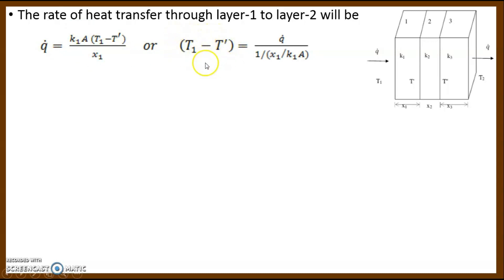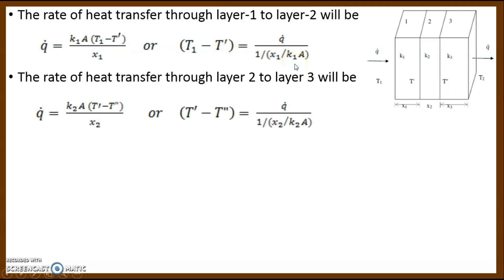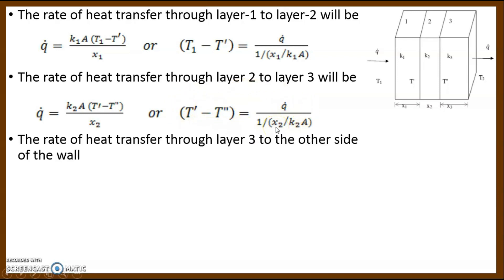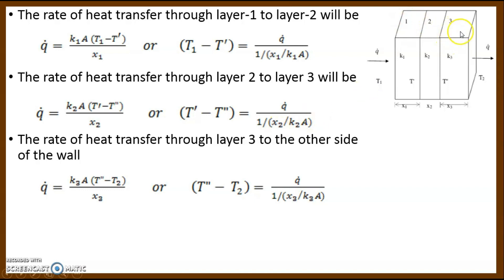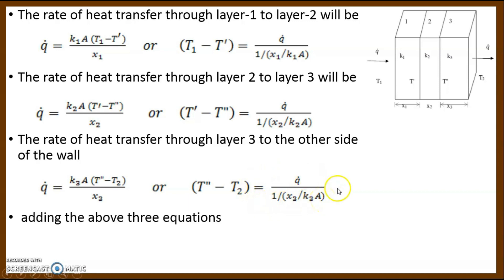Similarly, applying Fourier's law for layer 2 between surfaces at T' and T'' with thermal conductivity K2: Q-dot equals K2·A/X2 times (T' minus T''). Rearranging gives T' minus T'' equals Q-dot times (X2/(K2·A)). For layer 3, Q-dot equals K3·A/X3 times (T'' minus T2), giving T'' minus T2 equals Q-dot times (X3/(K3·A)).